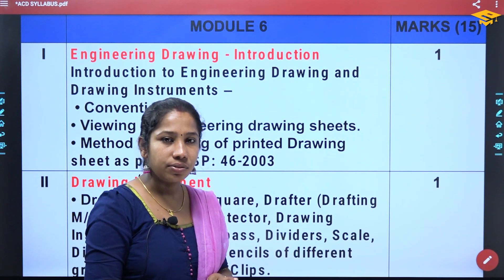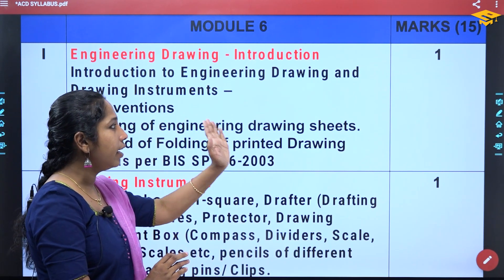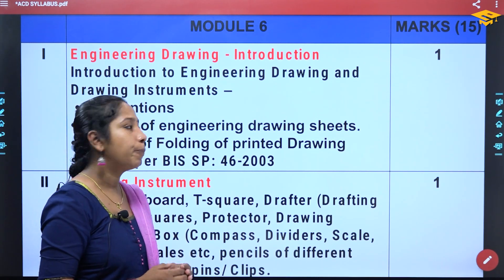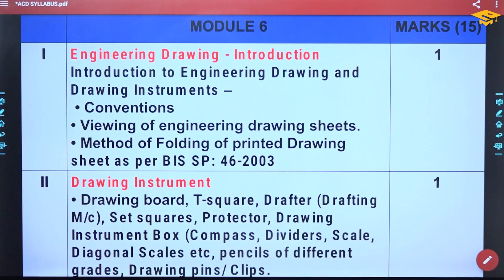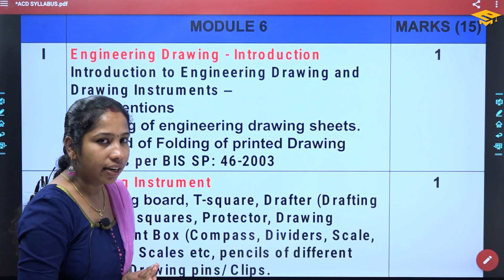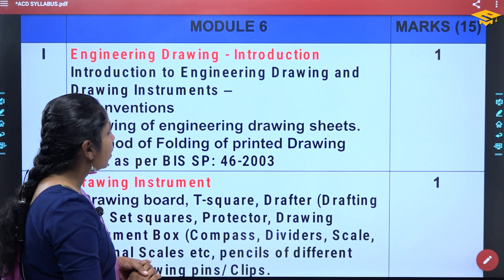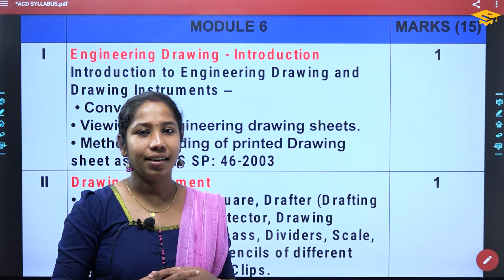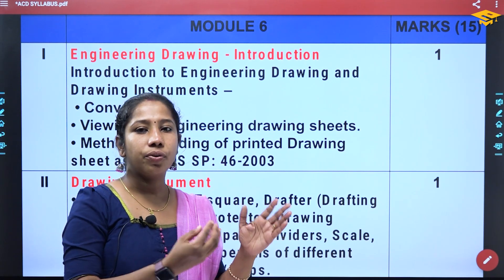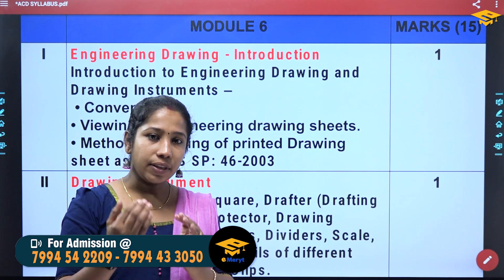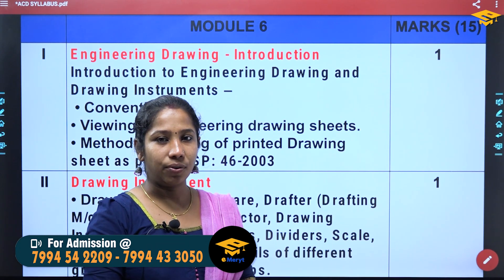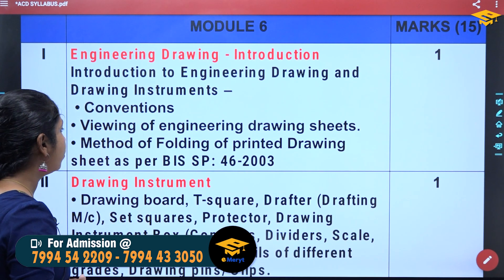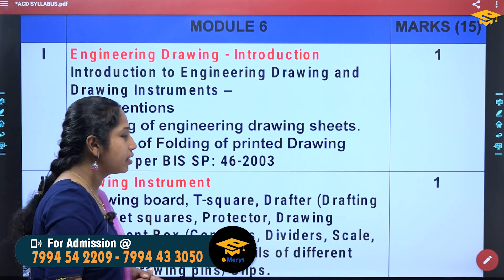I have to start the engineering drawing at Module 6, starting the modules with marks. This is the first thing: the introduction of engineering drawing. Introduction to engineering drawing and drawing instruments — when we start, we will cover drawing instruments, drawing board and drawing sheet, and additional tools. Conventions, viewing of engineering drawing sheets, and method of folding of printed drawing sheets as per BAS SP46 2003.